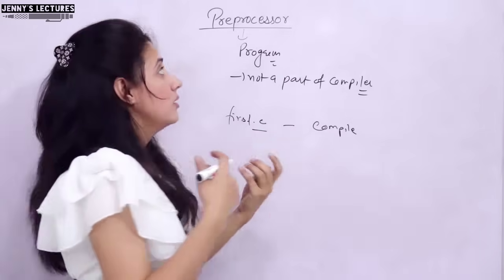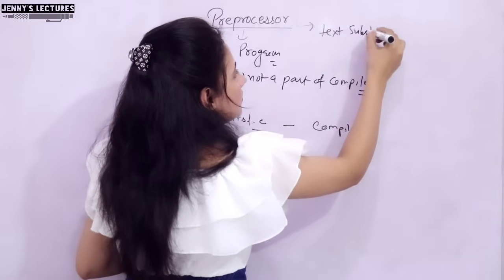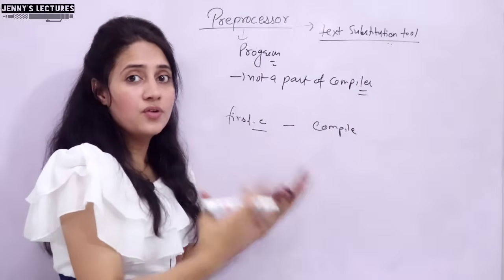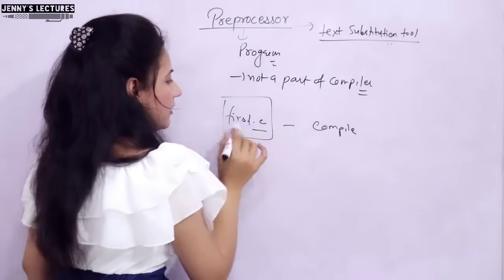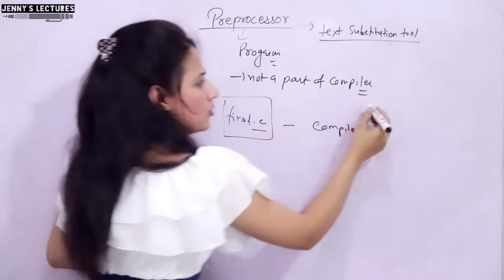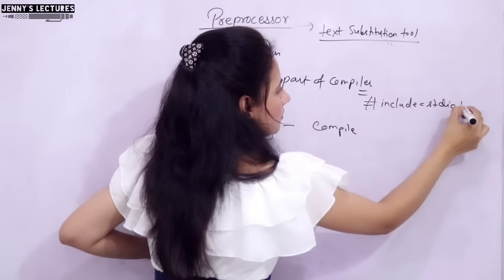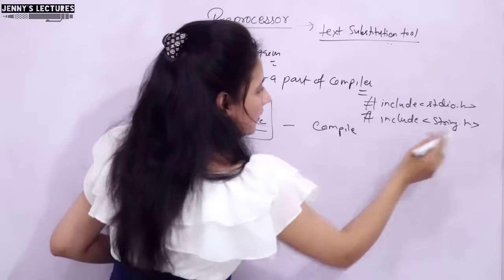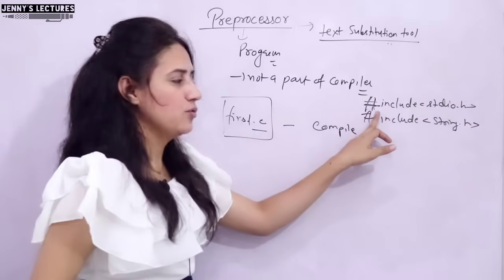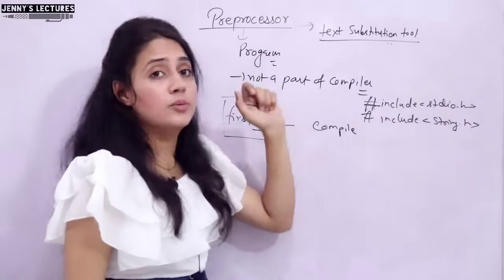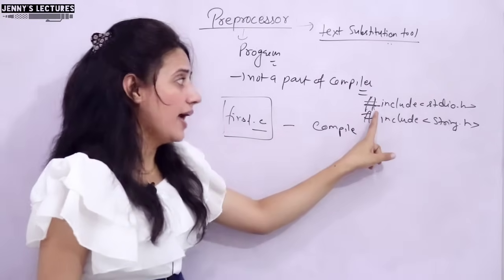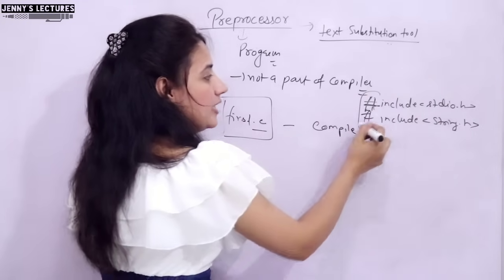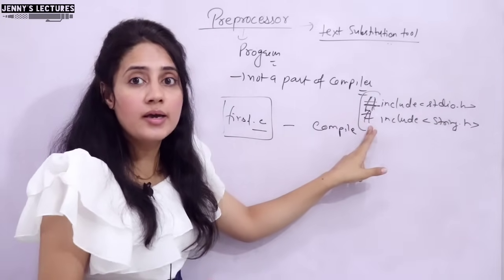The preprocessor is a text substitution tool. Suppose we have written a program - first.c - and in this program we use some header files like hash include stdio.h or hash include string.h. The hash symbol is known as a preprocessor directive. It gives direction to the preprocessor program. All preprocessor commands begin with hash. The compiler is not able to understand these lines beginning with hash.